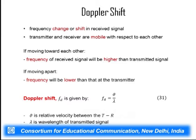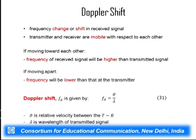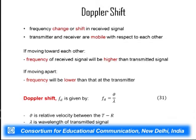Now we have Doppler shift. What is Doppler shift? It is a frequency change or phase shift in the received signal that occurs when the transmitter and receiver are mobile with respect to each other. If two communicating terminals are moving towards each other, the frequency of the received signal will be higher than the transmitted signal. If they are moving apart, the frequency will be lower. Doppler shift is normally given by the formula V/λ, where V is the relative velocity between transmitter and receiver — not the actual velocity — which is a function of the T-R separation distance, and λ is the wavelength of the propagating wave.